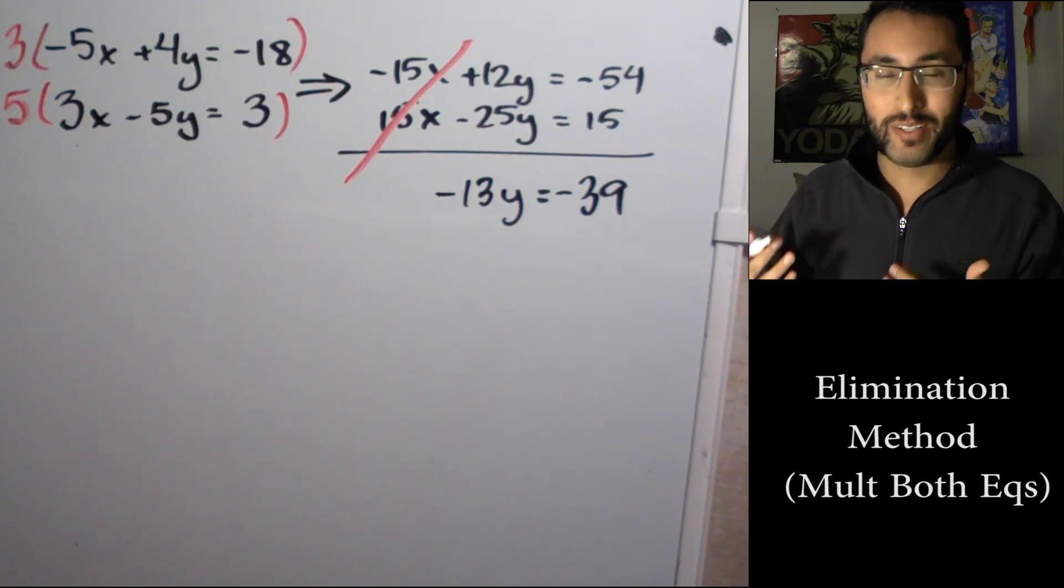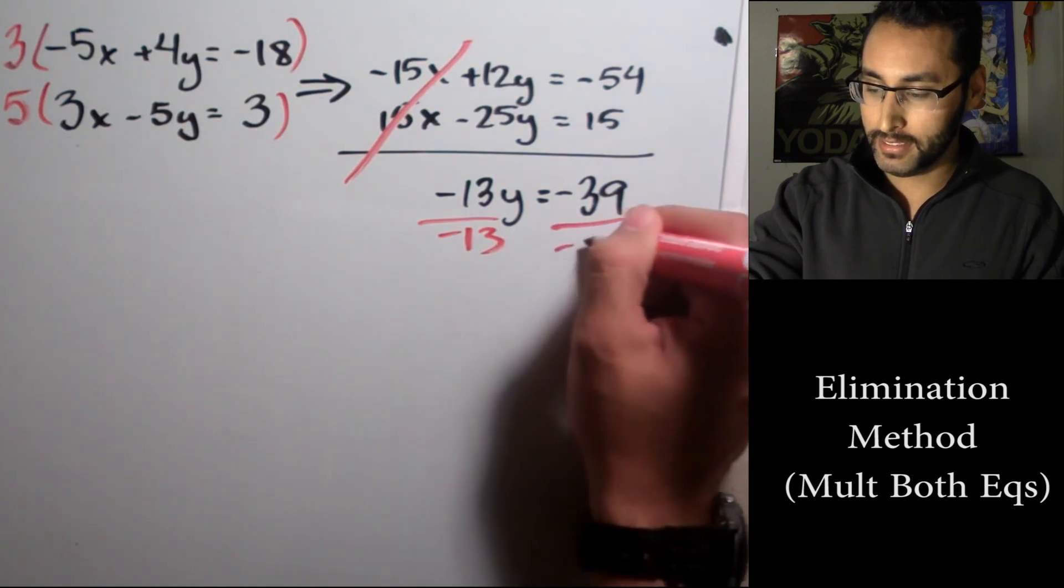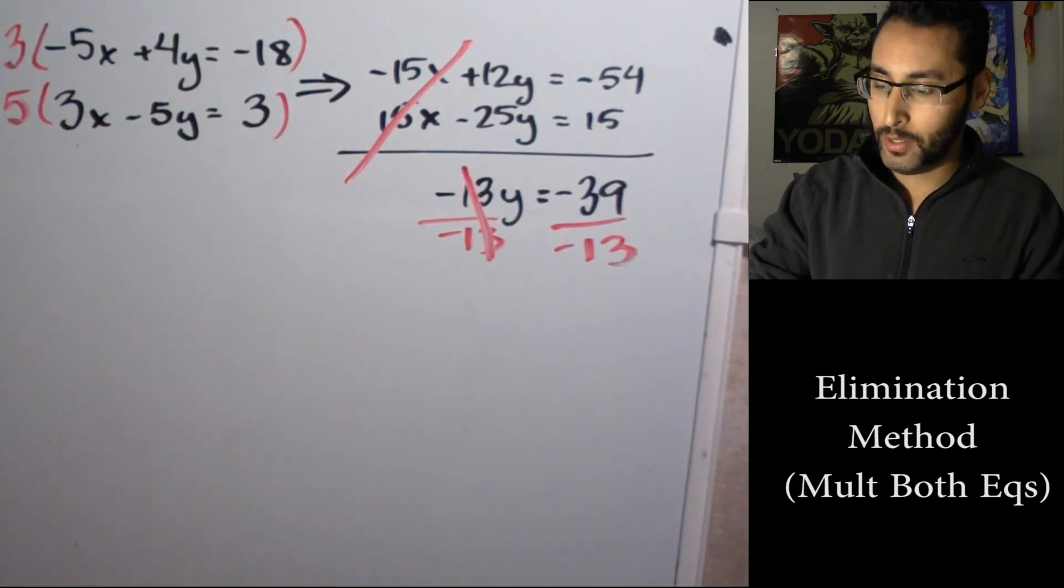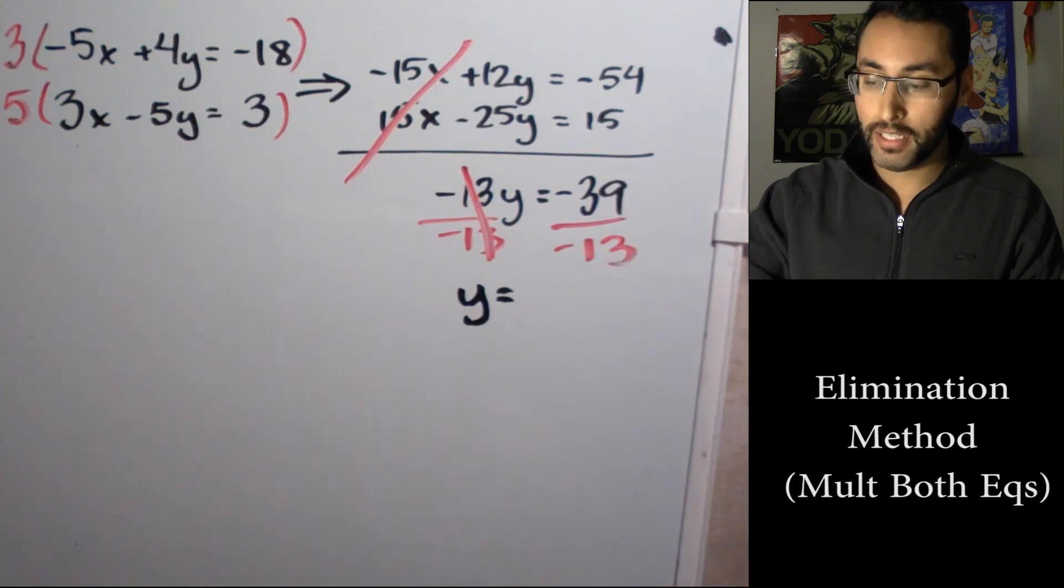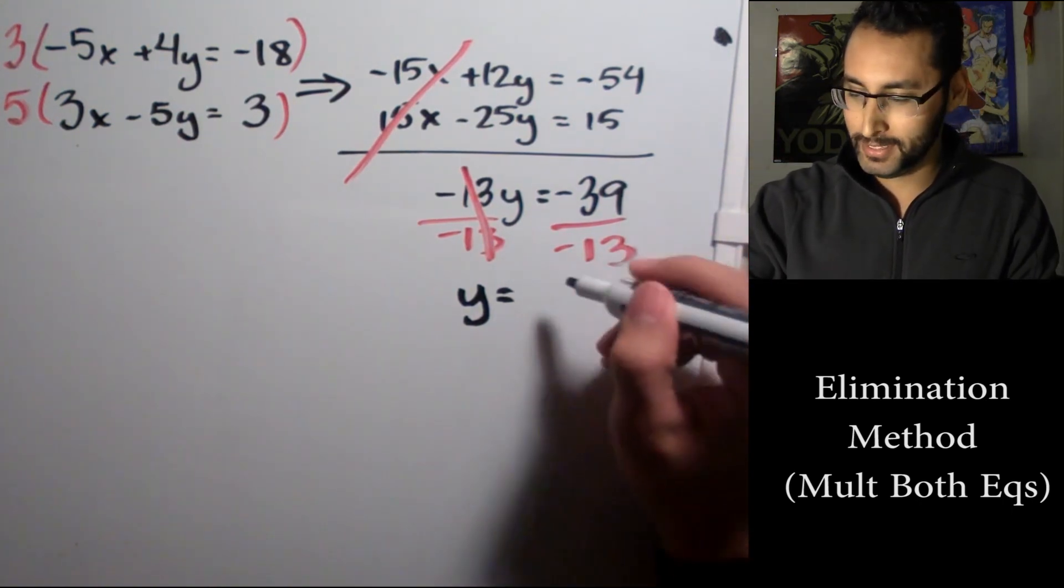So what we're gonna do is divide by our coefficient, which is -13, on both sides. We're gonna get y equal to, a negative divided by negative is a positive, and 13 can go into 39 three times. So y = 3.